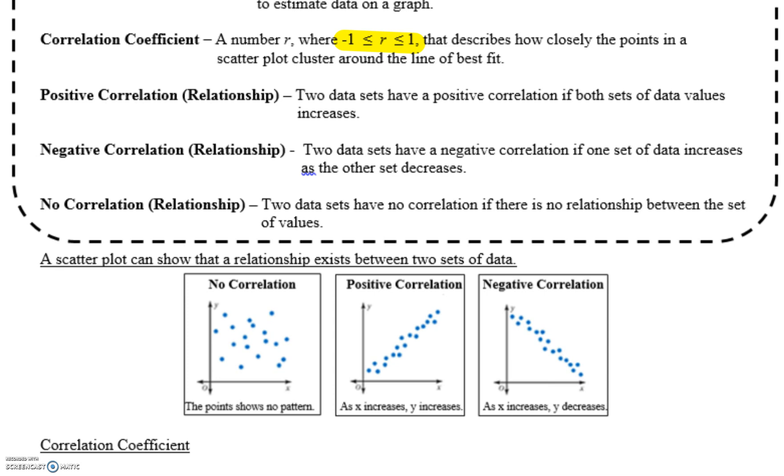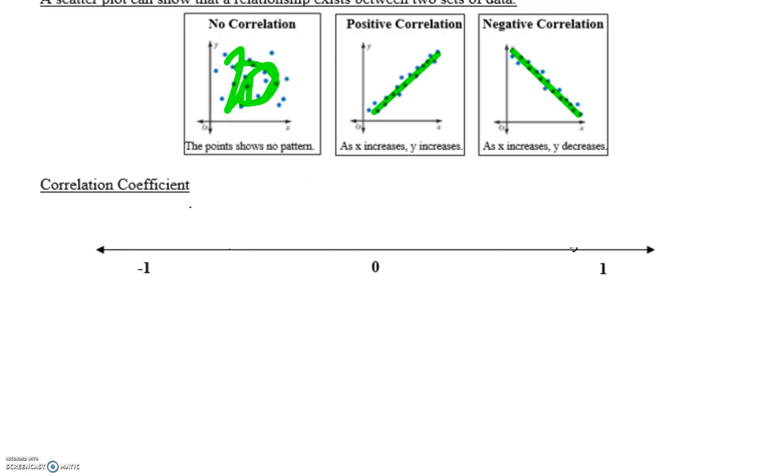So in your graphs below, it just shows you three different scatter plots and shows you the type of correlation. So for here, no correlation, you're going to see that your dots or plots are scattered all over the place, while positive correlation looks like it's increasing as we read left to right. With negative correlation, it decreases as we read left to right.